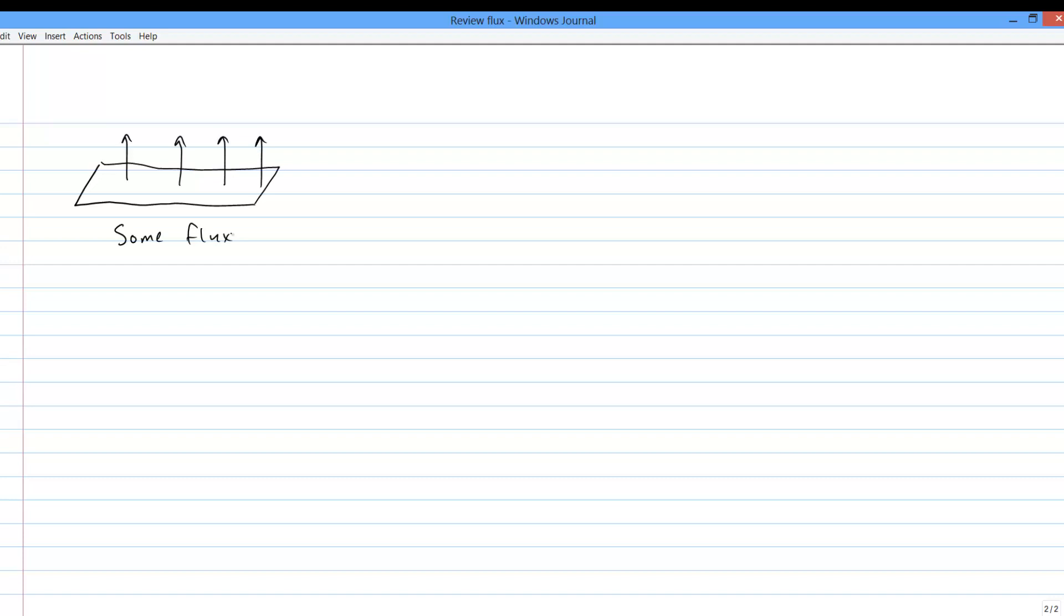Here's some flux through some shape. Here's less total flux on account of the shape being smaller. And here's more total flux on account of the field being stronger.